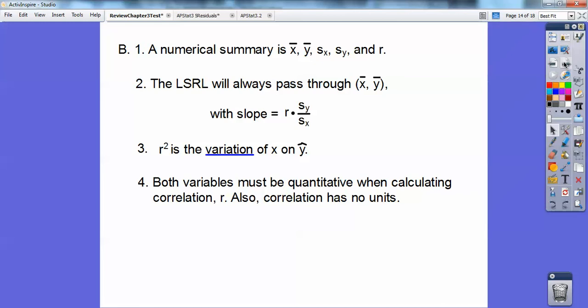Also correlation doesn't have any units. You can't have a correlation of 0.71 miles per hour. That's in units. It can't be in units. It's just a number that we want close to 1 or negative 1.